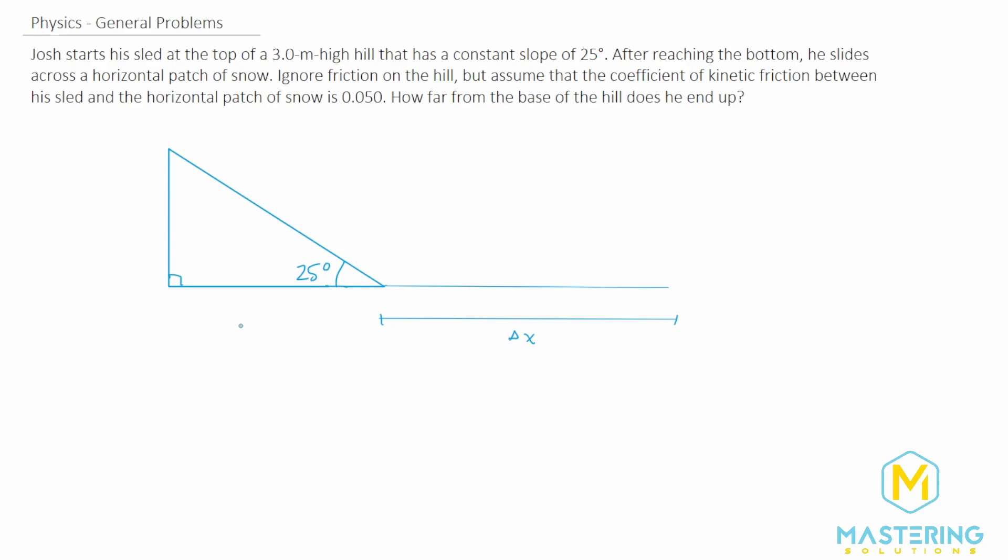To talk through what we're going to do before we jump into it, we need to figure out what is the final velocity at the bottom of the hill. That final velocity, so v final, is going to turn into the initial velocity right here.